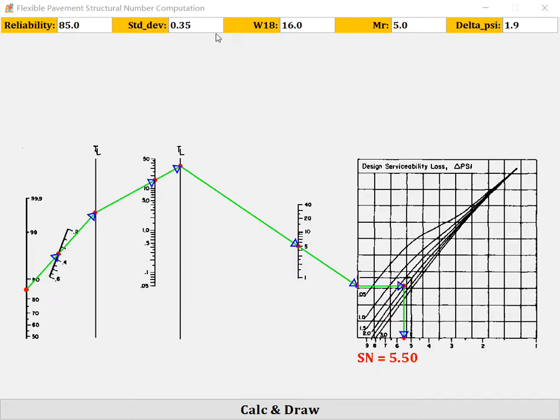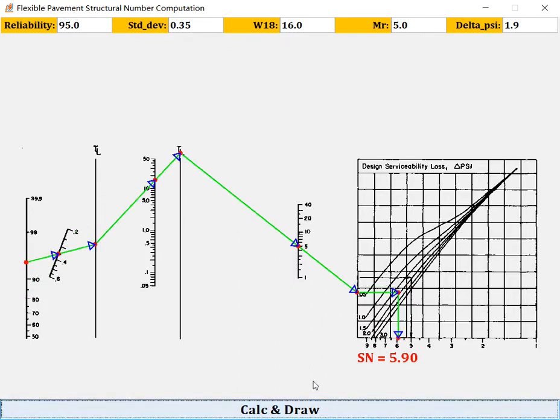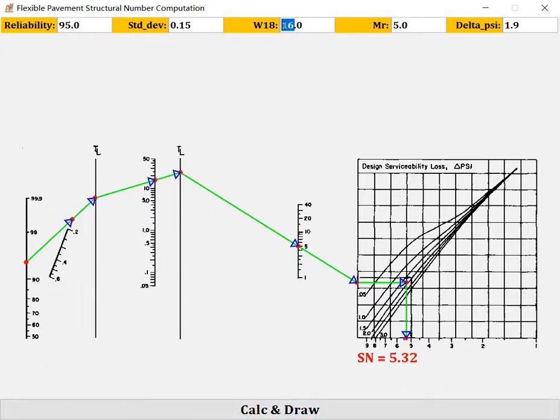You know these numbers you input here, and suppose you change to 95. Then the structural number changes to 5.9. So if you change the standard deviation to 15 and W18 you change to 20, the structural number will be 5.5, and so on.